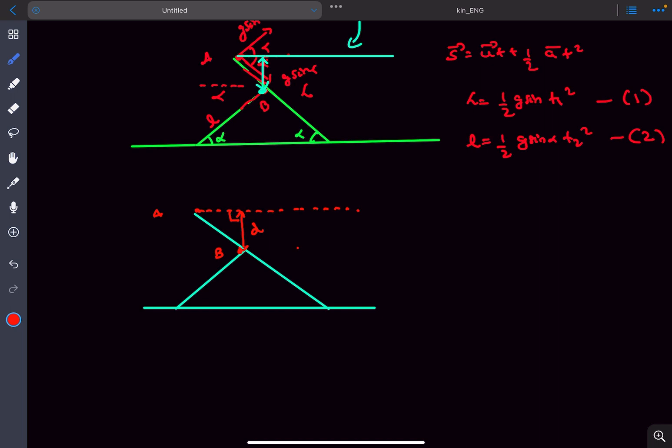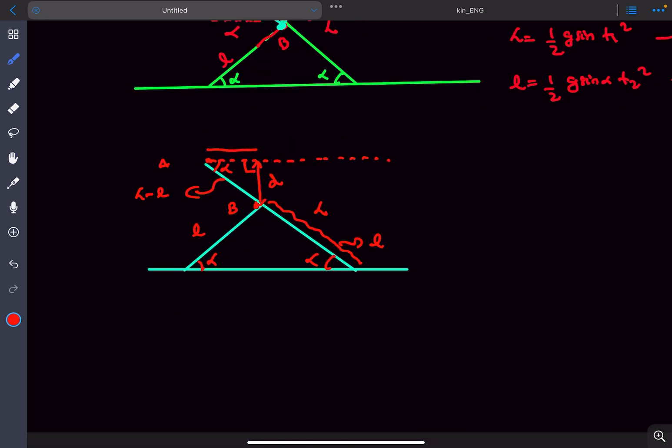The length of the longer slide is L and the smaller slide is small l. We've been given that these two angles are alpha, which means this length is also going to be L, because these two angles are equal, which means the sides opposite to them must be equal as well. So this distance is going to be capital L minus small l by geometry.